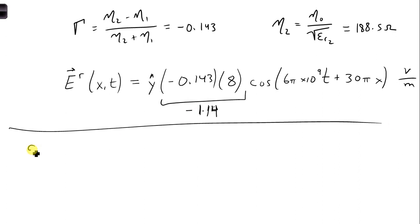For part D, we can find the reflected magnetic field from the reflected E field using this expression we just obtained. So H reflected is a function of X and T. We need a direction, which comes from gamma hat crossed with the reflected E field.